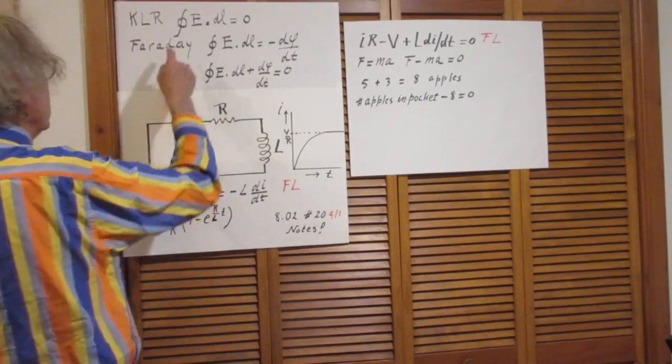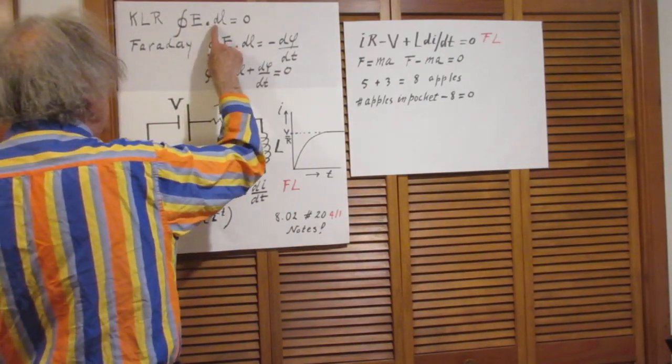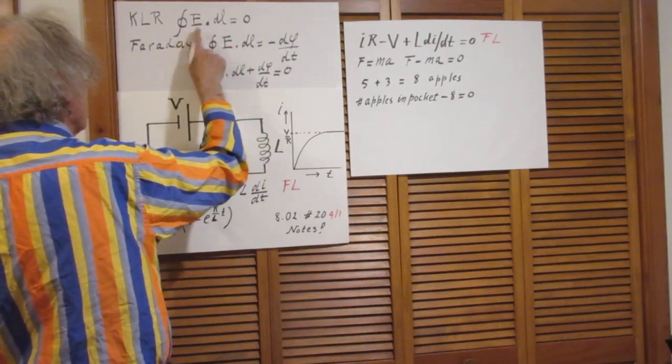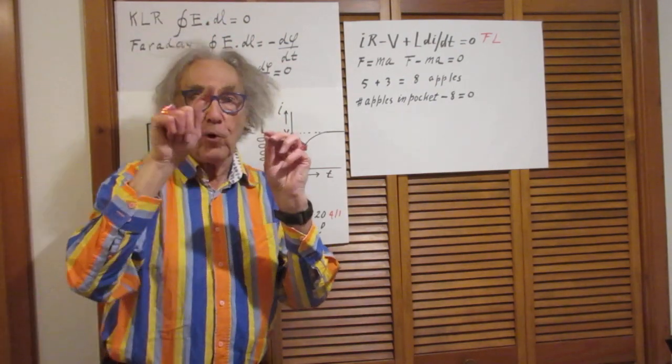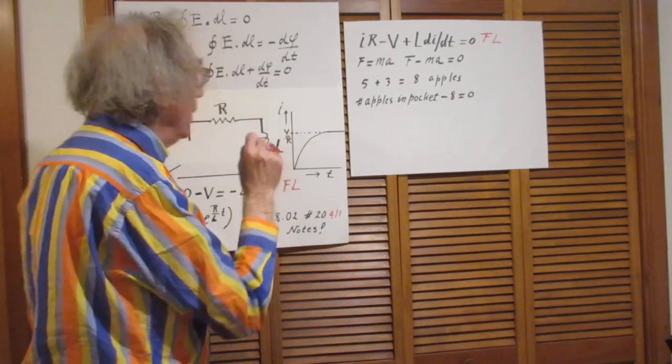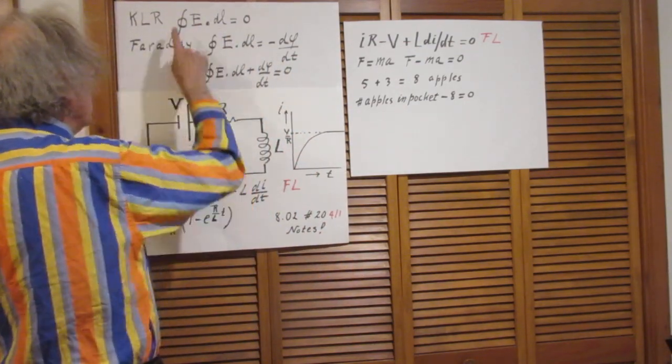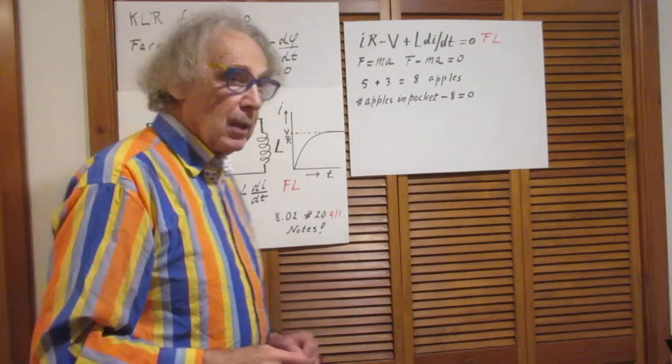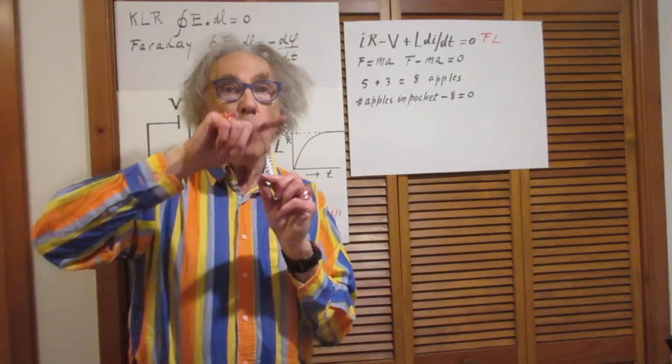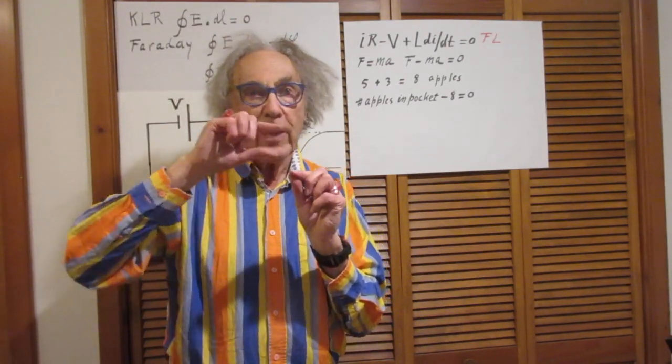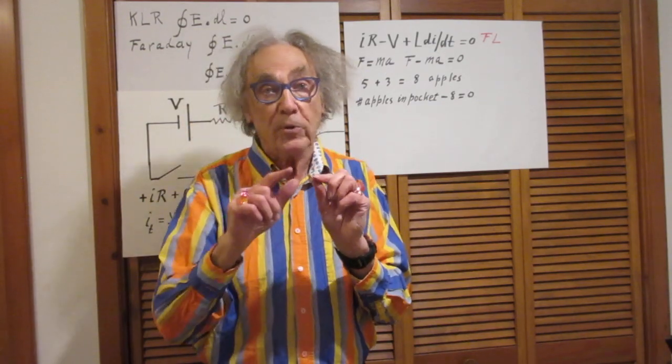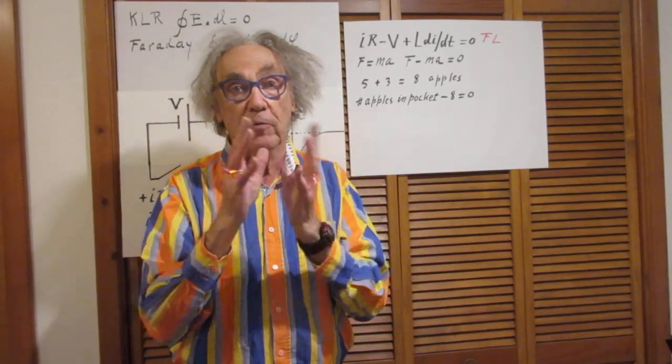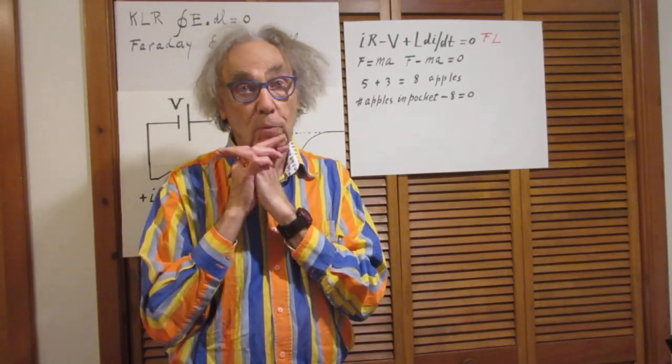The Kirchhoff rule is that the closed-loop integral of E dot DL is zero. E is a vector and DL is the vector that is the path that you follow when you go around the closed-loop and you have to take the dot product between them. So that means as you go along in the circuit, you add all the voltages that you measure, all the voltage differences between points, and if you add them all up, that's zero.